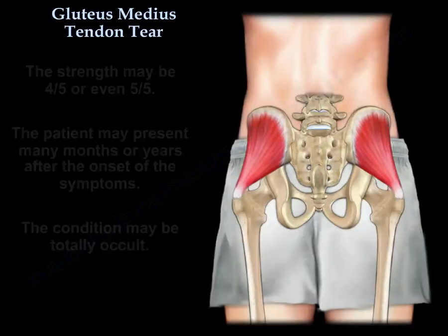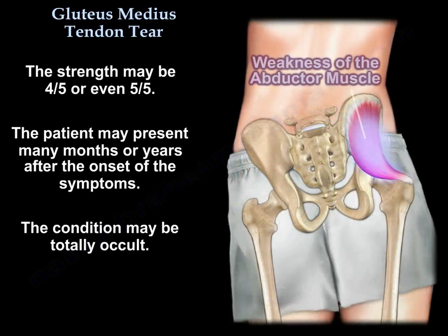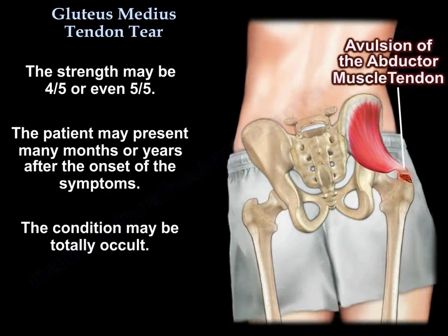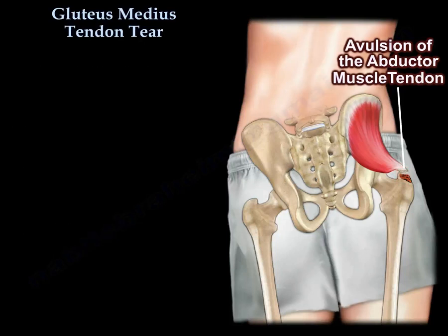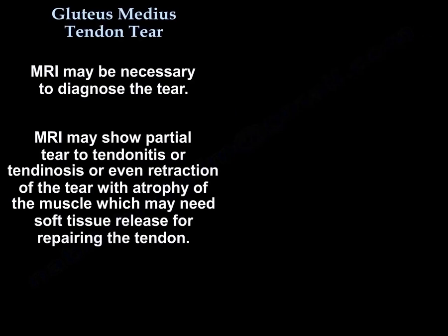The strength may be 4 over 5, or even 5 over 5, and the patient may present many months or years after the onset of the symptoms. The condition may be totally occult. MRI may be necessary to diagnose the tear.